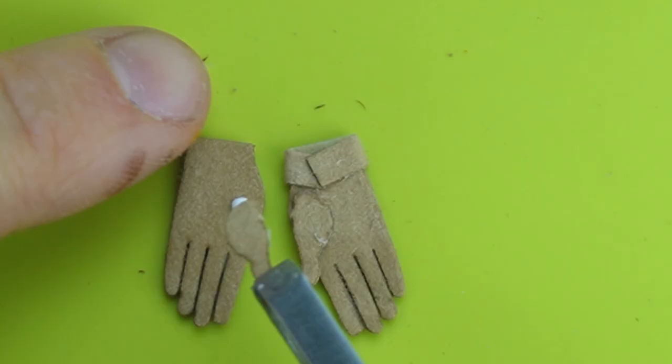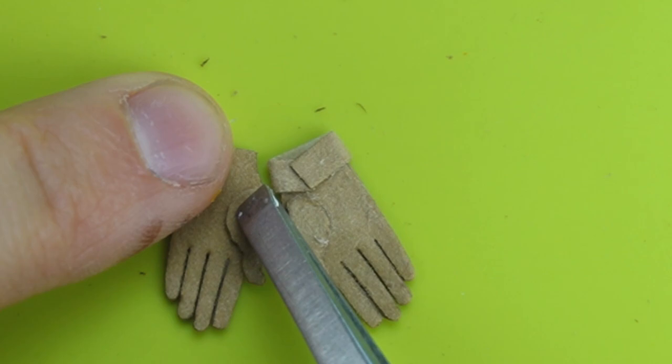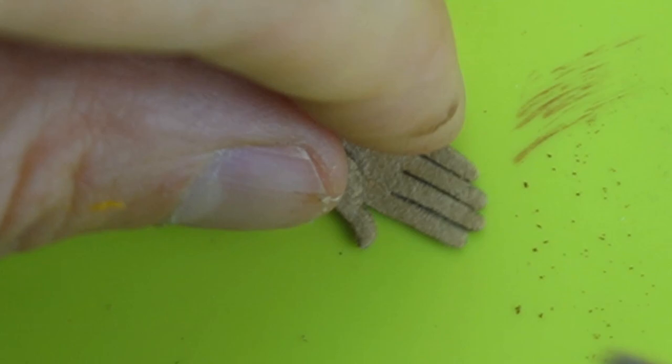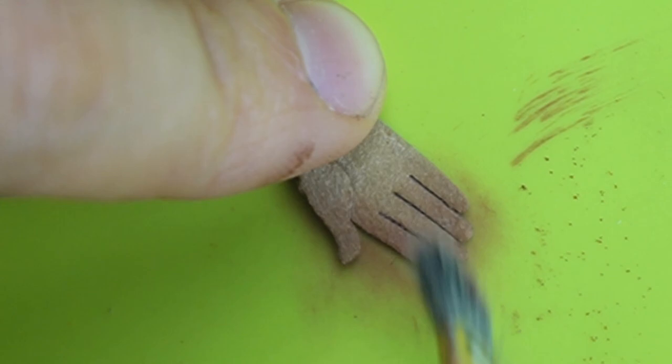When I assembled the second glove I made sure the thumbs were in the same place. Then I got my chalk pastel so I can make these gloves look dirty and used. I used some brown chalk pastels and concentrated around the fingertips.